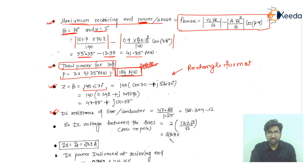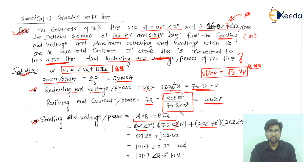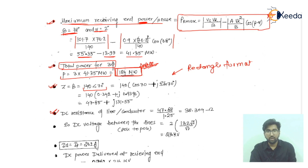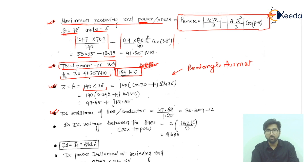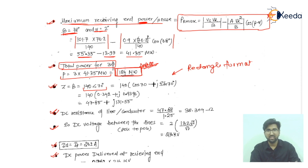Since the DC current ID equals IP = 262 A (the same current we found earlier), the DC power delivered at the receiving end is VD × ID = 216 kV × 262 A = 56.70 MW. This is the receiving end DC power when the line is converted to a DC line. Thank you and bye bye.